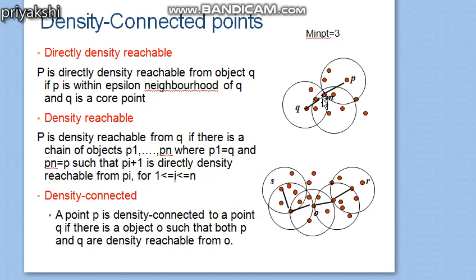But the reverse is not always true. P is not directly density reachable from m, because p is not within the boundary of the epsilon neighborhood of m. So the concept of directly density reachable is asymmetric — if m is directly density reachable from p, it does not mean that p is also directly density reachable from m.